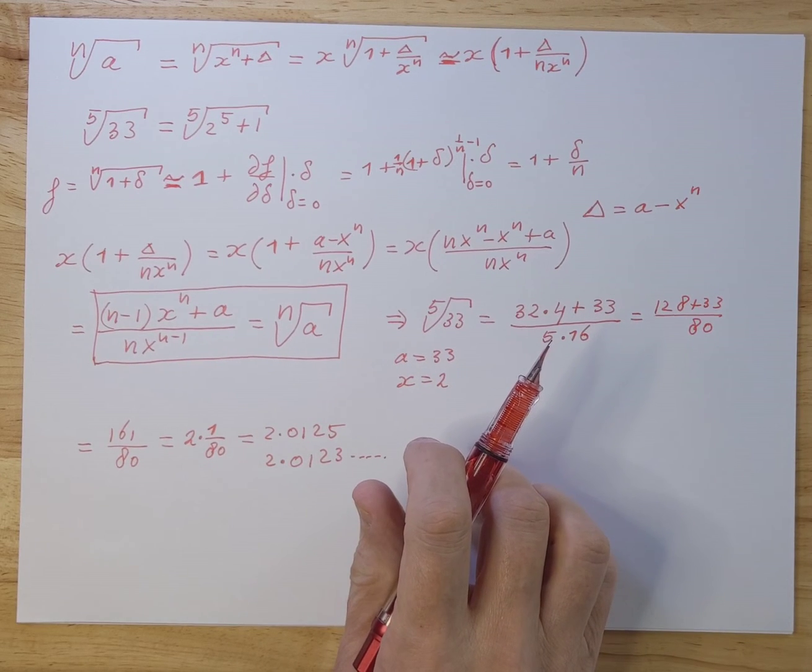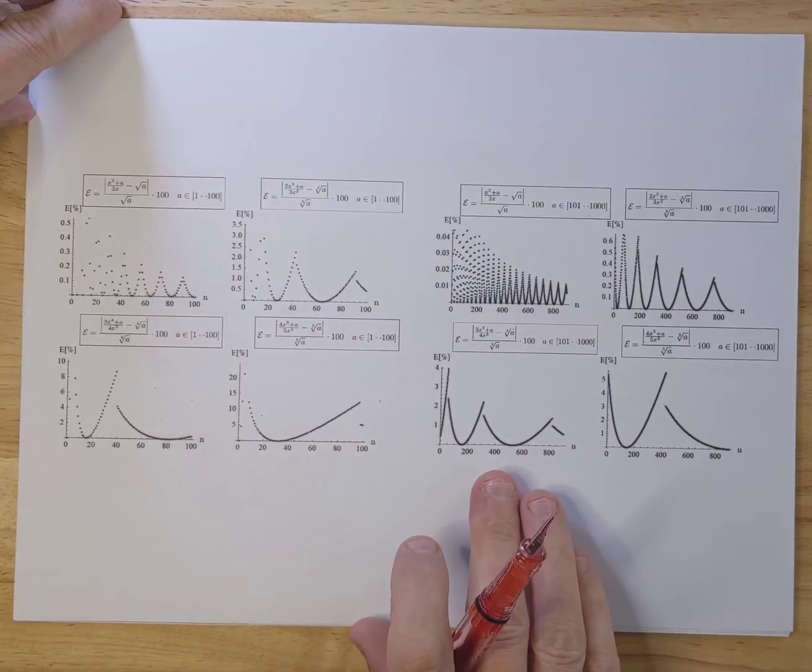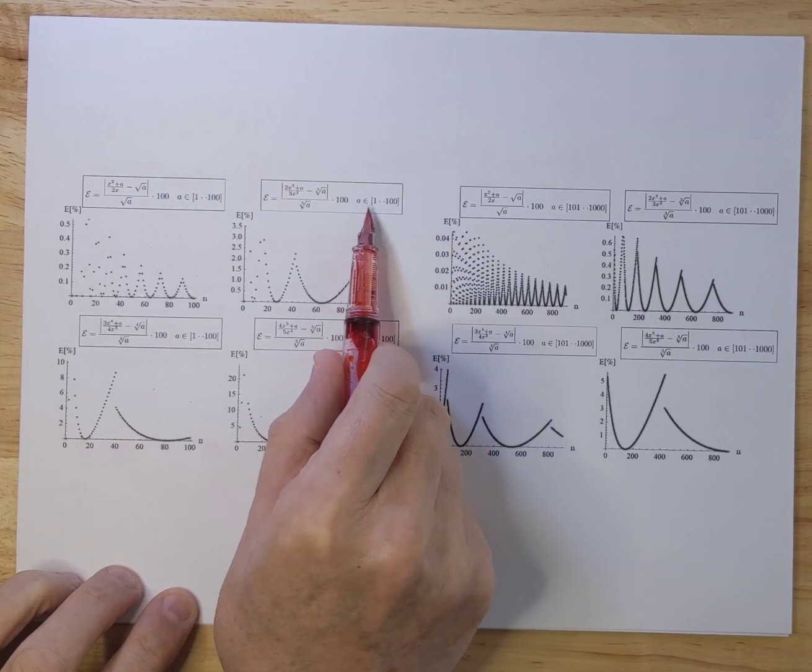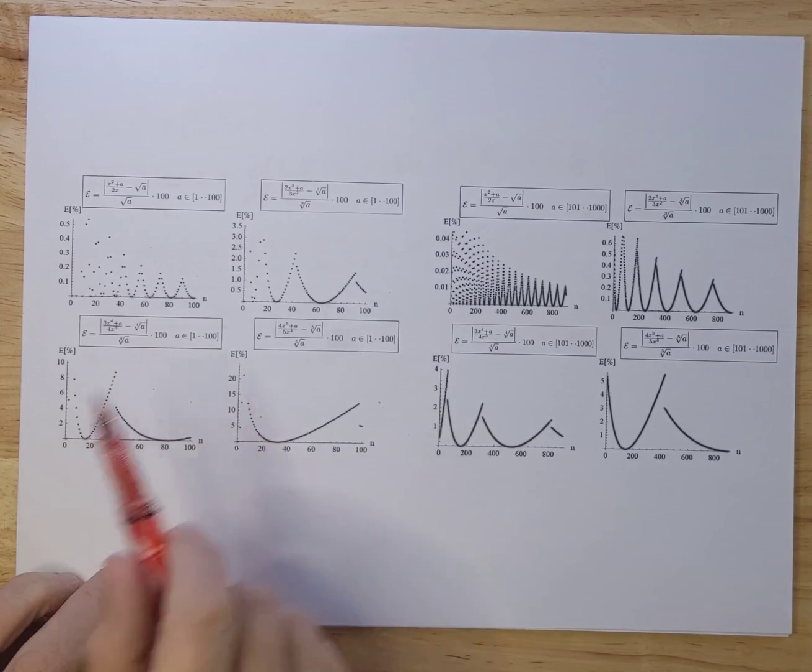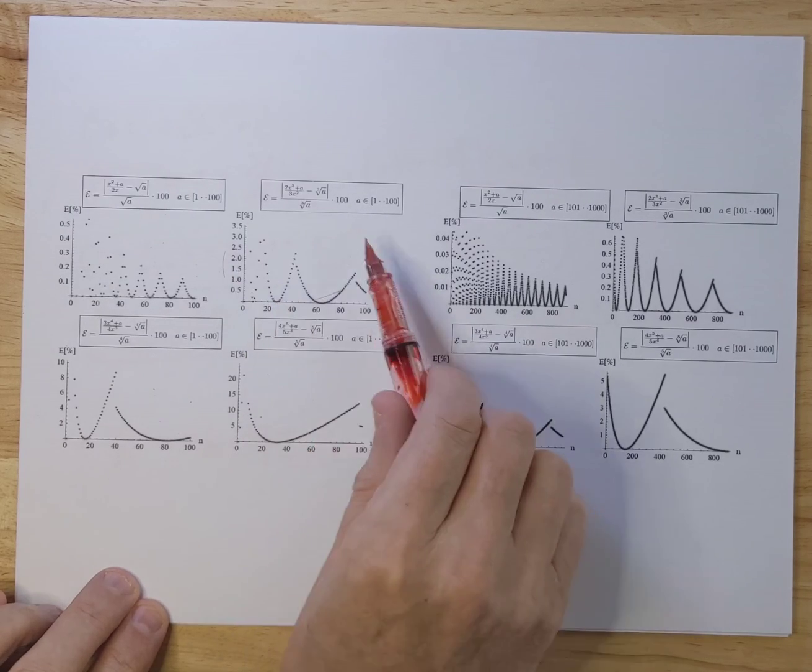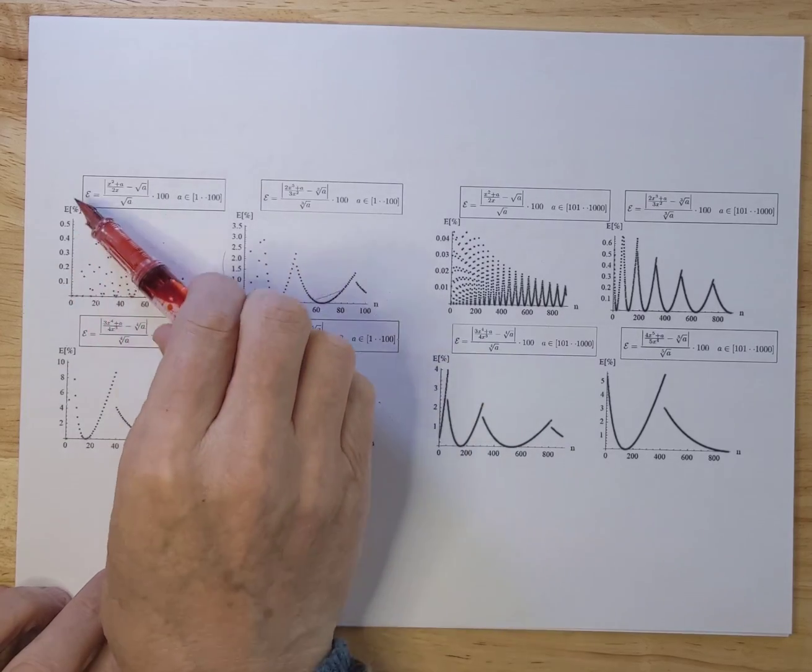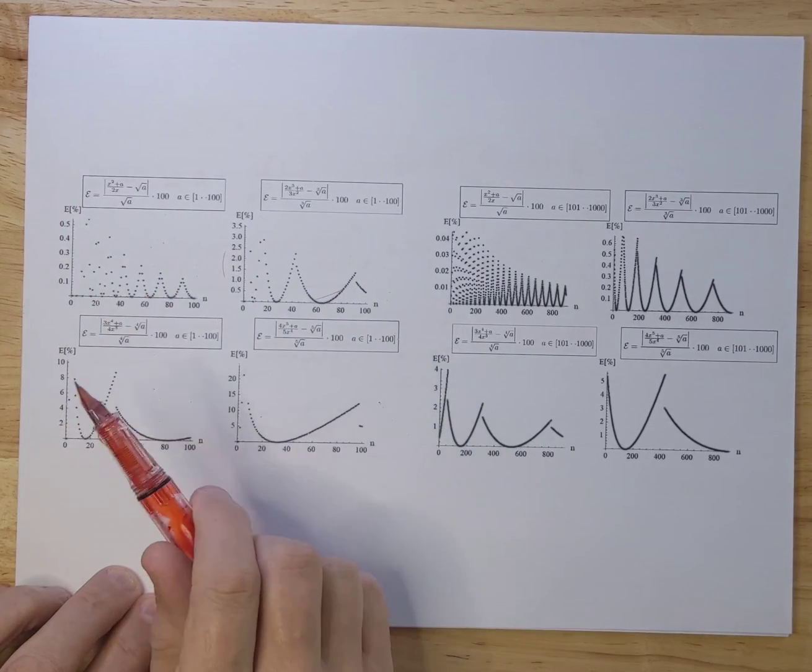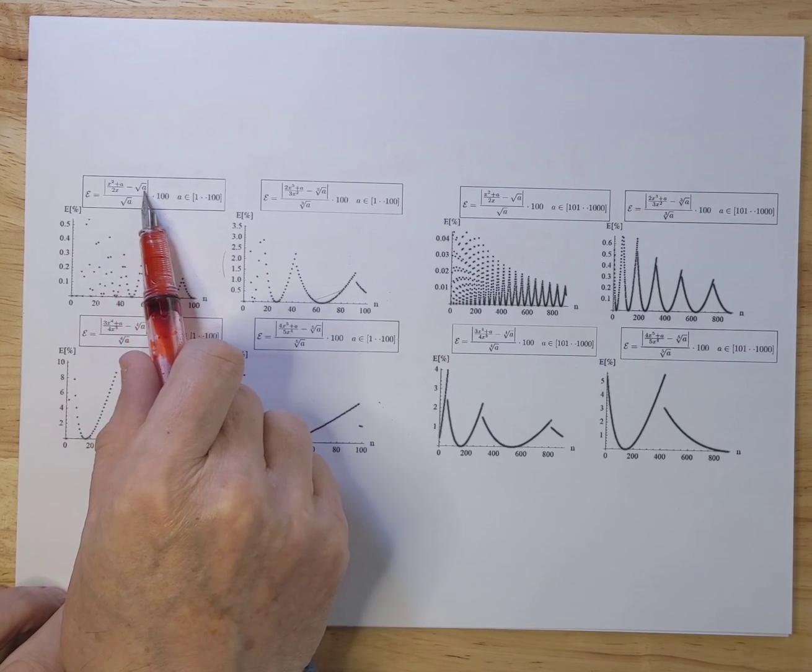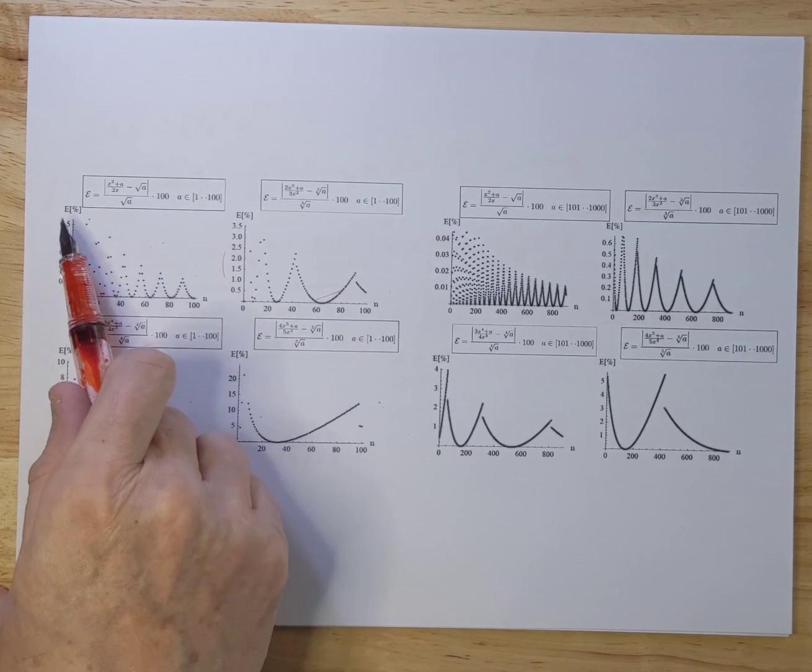So what I did is I plotted out some curves to give you a feel for how accurate this calculation is. On the left-hand side, we have values of a between 1 and 100, so we try all kinds of routes. Here we have the square route, here we have the cube route, here we have the fourth, and here we have the fifth route. And the errors you see on the vertical axes are percentage errors. So it's essentially the approximated value minus the real value divided by the real value times 100%.